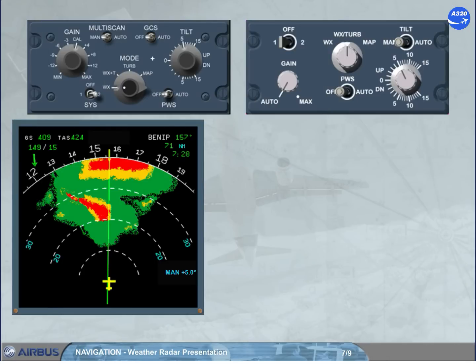A ground clutter suppress (GCS) switch, only installed on the left-hand side version: when in auto, allows the suppression of the ground echo on the screen. In off position, allows the normal use of the radar.